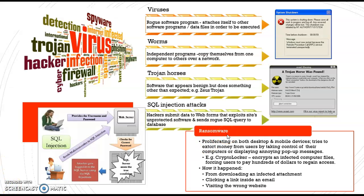Then we have ransomware. Ransomware proliferates on both desktop and mobile devices and tries to extort money from users by taking control of their computers or displaying annoying pop-up messages. Once you try to close the pop-up message, it appears again and again. If you try to type something, they control you over the network and you cannot do anything. An example is CryptoLocker, which encrypts infected computer files and requires users to pay hundreds of dollars to regain access. This can happen through downloading an infected attachment, clicking a link inside an email, or visiting the wrong website.